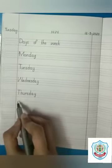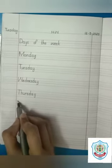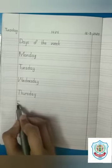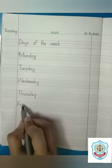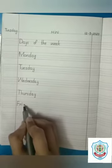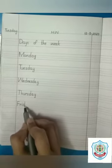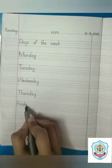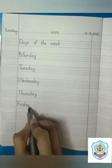Friday — the next one is Friday. F has a sound F. R has a sound R. I has its own sound I. D has a sound D. And A, Y makes a sound A. Friday.